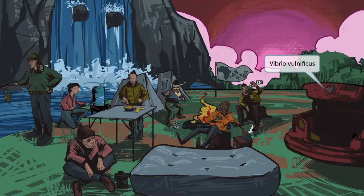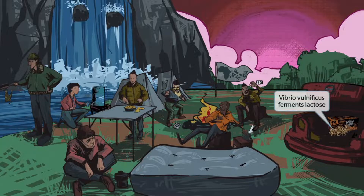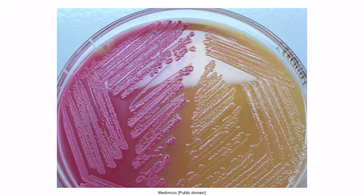Now let's move on to discuss Vibrio vulnificus. To represent this, we've shown a car with the prominent Volvo logo seen on the trunk — Volvo car for Vibrio vulnificus. Notice that we've shown several snacks in the back of the trunk, including monkey animal crackers, which is our symbol for lactose fermentation on MacConkey agar. So Vibrio vulnificus ferments lactose on MacConkey agar and would appear pink on that medium.